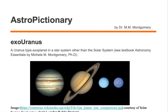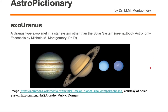An exo-Uranus is a Uranus-type exoplanet in a star system other than the solar system. Here we're looking at our Jovians in our own solar system. Uranus is the one that's labeled U and it's third from the left. An exoplanet in a star system other than the solar system that is like Uranus is an exo-Uranus.